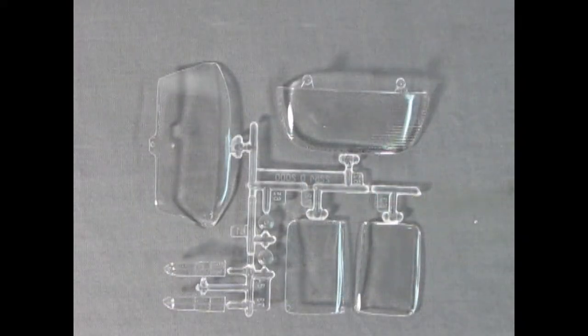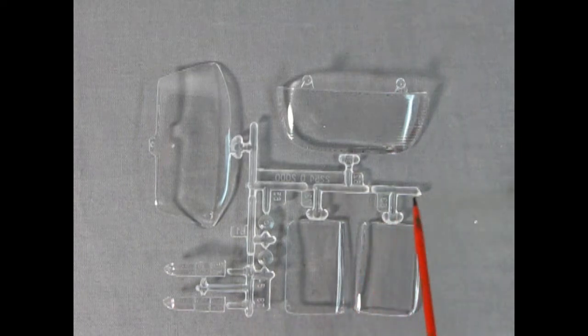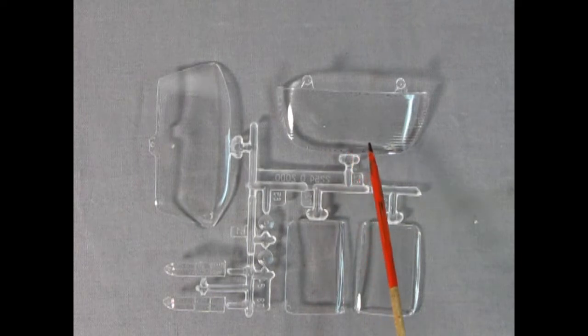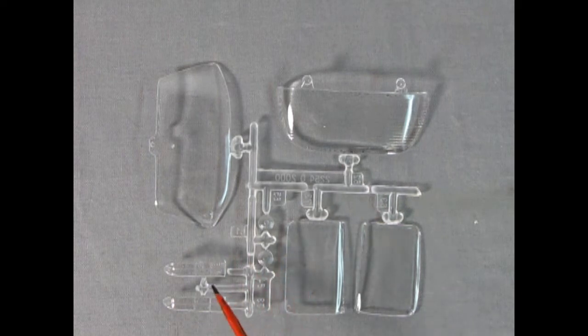Here's the glass components of the kit and Revell was really careful when they put this in a plastic bag to avoid any scratches. Here on our rear window you can see the rear window defogger lines that are etched in. There's our front glass, our rear tail lamps, and the t-tops as well as our front headlights.